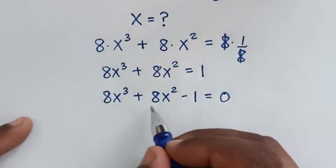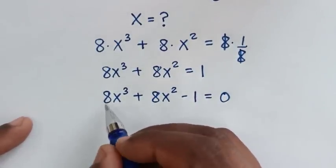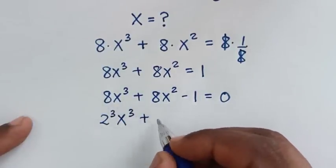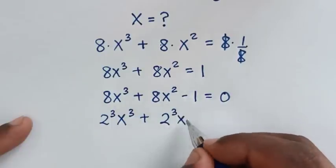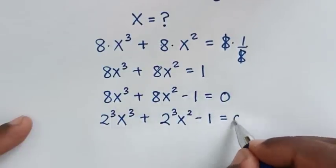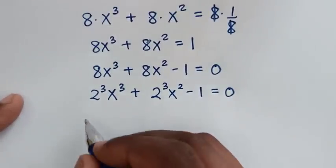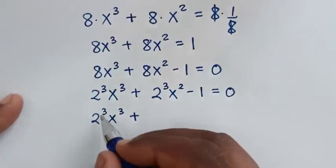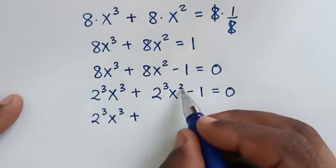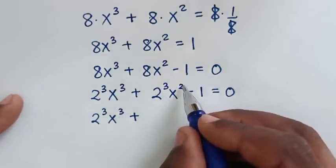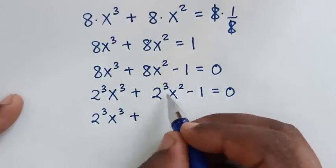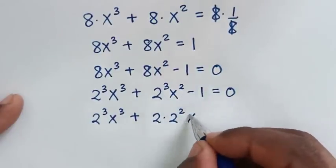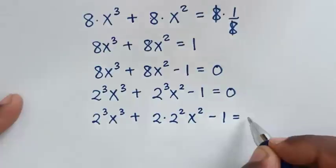In the next step, we rewrite 8 as 2³. So it becomes 2³ times x³ plus 2³ times x² minus 1 equals 0. Then we note that 2³ is the same as 2 times 2², so this becomes 2³x³ plus 2 times 2² times x² minus 1 equals 0.